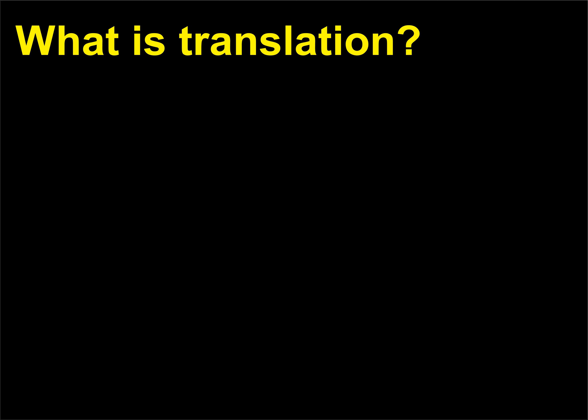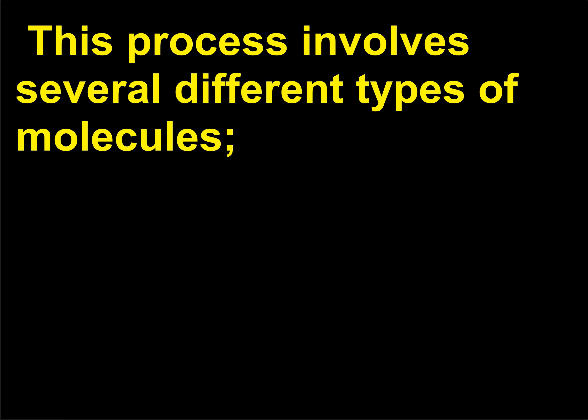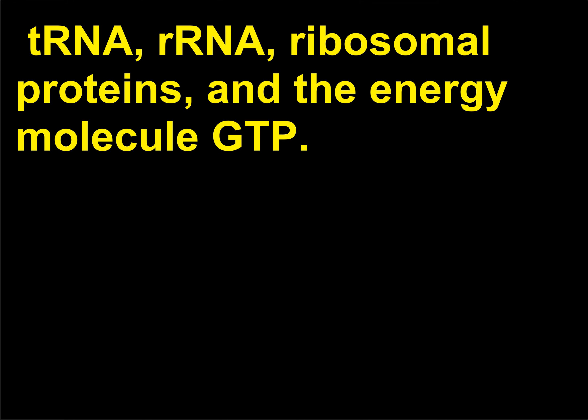What is translation? Translation is the process that produces polypeptides from an mRNA transcript. This process involves several different types of molecules: tRNA, rRNA, ribosomal proteins, and the energy molecule GTP.